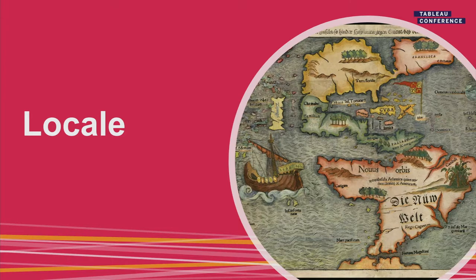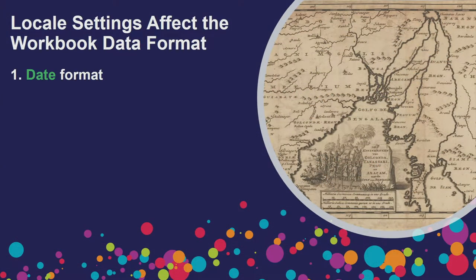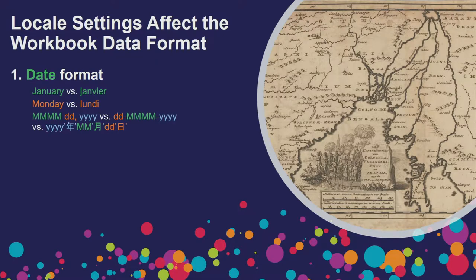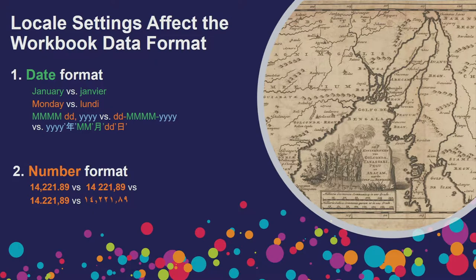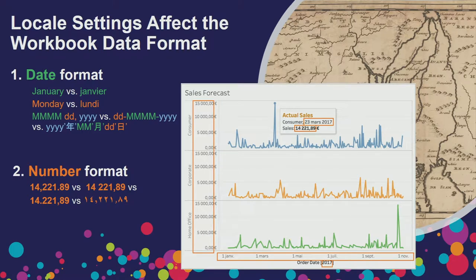For locale, it affects your workbook data format. One thing it impacts is the date format: how months are displayed, how weekday names are displayed, and what order — year-day-month, year-month-day, day-year-month, et cetera — and the separators between them. Another thing impacted is number formats. In the United States, we have a dot for a decimal and a comma for a thousand separator. But in some countries the thousand separator could be a space, an apostrophe, or a dot, and the decimal could be a comma. In some languages like Arabic, there's native digit support.